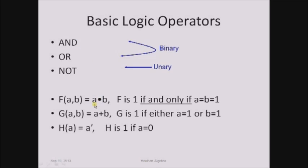So f(a, b) = a AND b. The output of this function is one only when both a and b values are one. If any of the values in a and b is zero, then the output is zero. Next is OR: g(a, b) = a plus b, where plus is the symbol used for representing the OR operator.